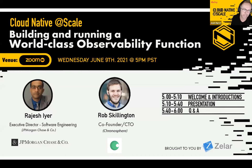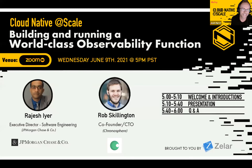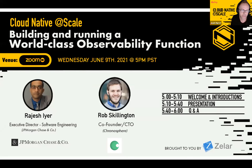If you would like to speak or help out, please don't hesitate to reach out. The title for tonight is 'Building and Running a World Class Observability Function.' Observability teams as a centralized function within IT organizations is a relatively new phenomenon — these teams manage monitoring and observability toolsets and empower developers to push the right data into systems.